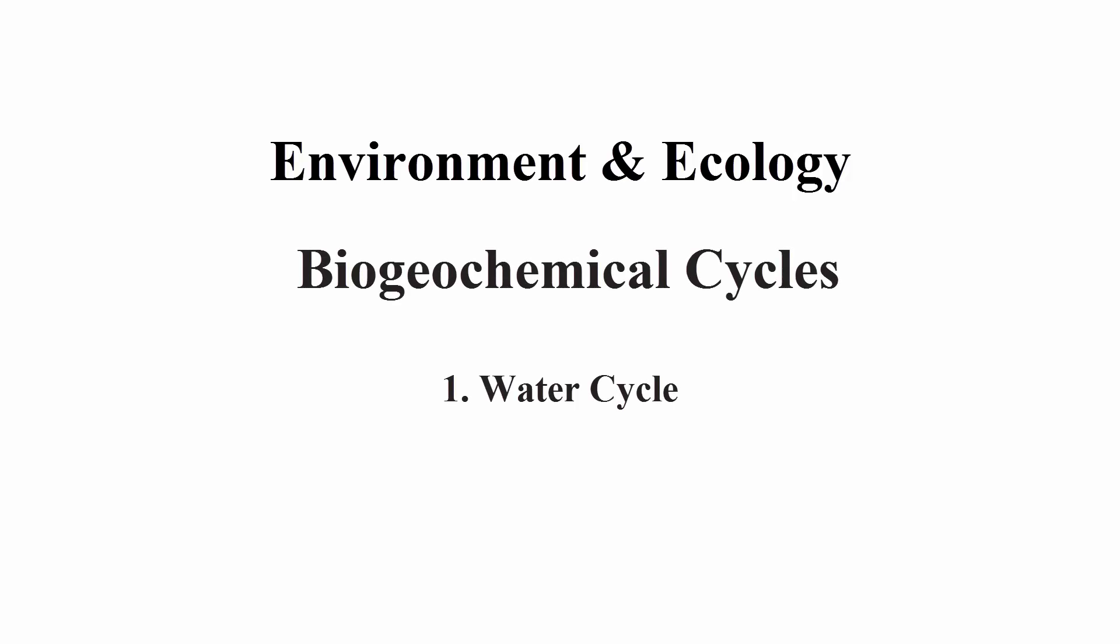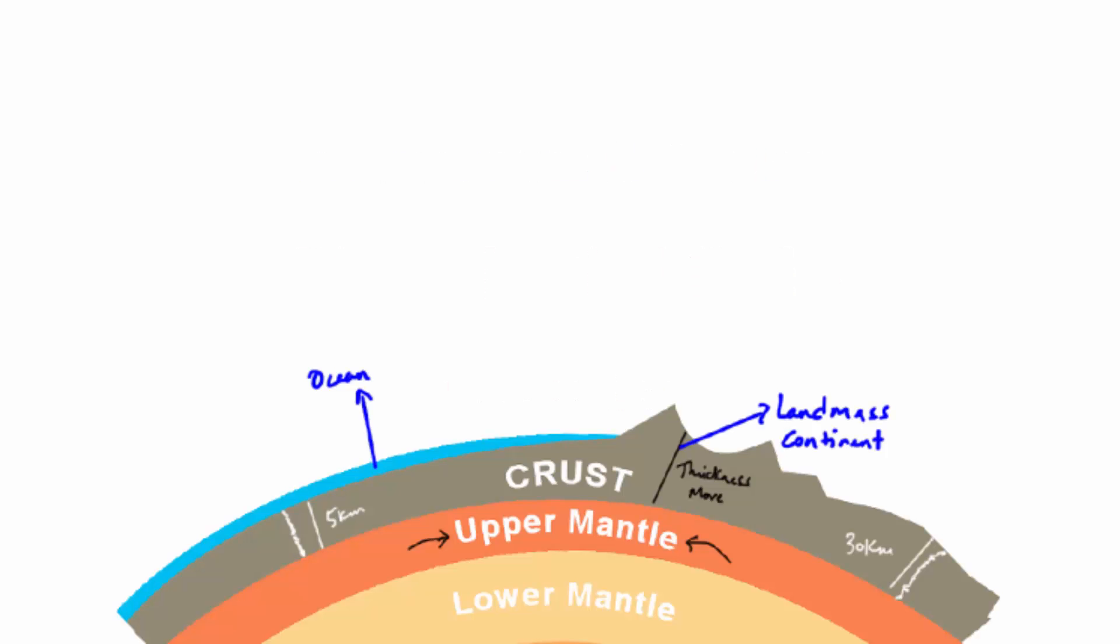The first one is water cycle. The lithosphere is the outer part of the earth, consisting of the crust and upper mantle. And then there is the atmosphere which contains gases surrounding the earth.